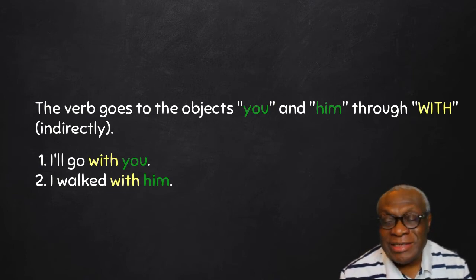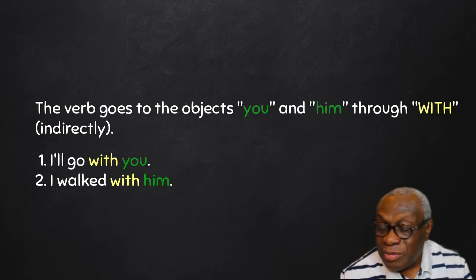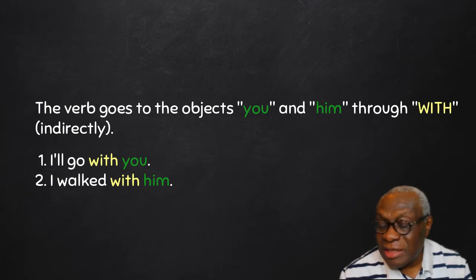In other words, with is like a barrier, like a border that the verb has to cross before reaching the object. That is why we say these are indirect objects, because the verb goes indirectly to you and then to him.